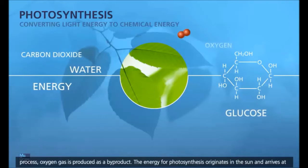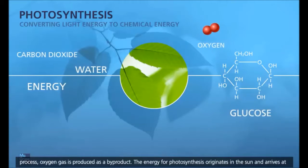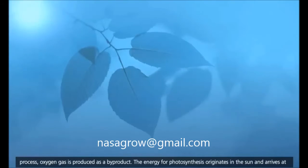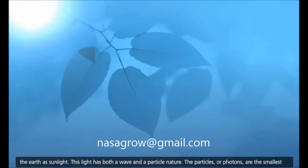In the process, oxygen gas is produced as a byproduct. The energy for photosynthesis originates in the sun and arrives at the earth as sunlight.